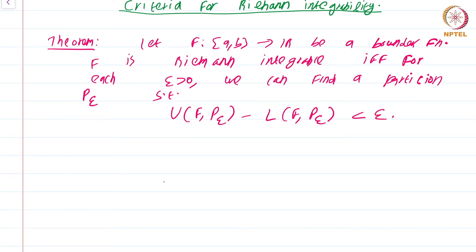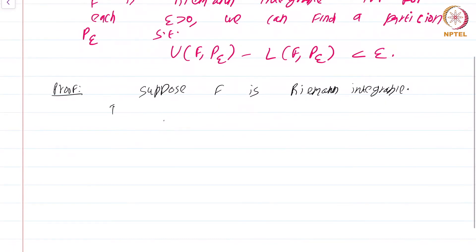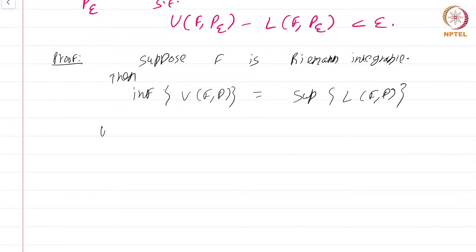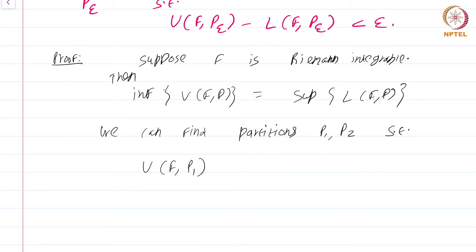The proof of this is very straightforward. Suppose f is Riemann integrable — we will first deal with that direction. Then that just means that the infimum of U(f,P) is equal to the supremum of L(f,P). That is the definition of a function being Riemann integrable, which just means that we can find partitions P1 and P2 such that U(f,P1) minus L(f,P2) is less than epsilon.